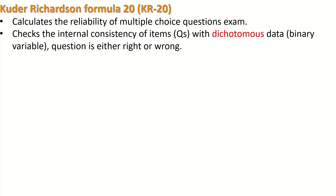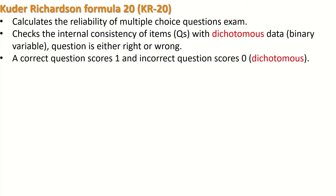It applies to questions that are dichotomous, i.e., having only two options — either right or wrong. The data are therefore binary or dichotomous variables. A correct answer is scored as one and an incorrect answer is recorded as zero. So the multiple choice question has only two possible answers: right or wrong, zero or one — this is dichotomous data.